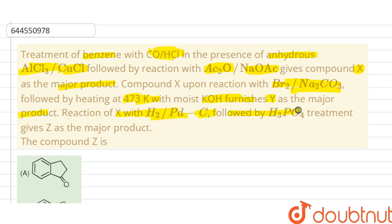Reaction of X with H2/Pd-C followed by H3PO4 treatment gives Z as the major product. The compound Z is... We can see that the given reaction takes place in question, so find out the Z product from the four options. Let's start the solution.